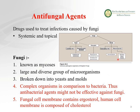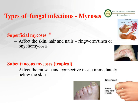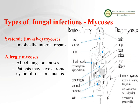Types of infections or mycoses: we can have superficial infections affecting the skin or nails, like tinea or onychomycosis. Subcutaneous mycoses affect the muscles or connective tissues immediately below the skin. Systemic or invasive mycoses involve infection of the internal organs — brain, lungs, heart, or liver — and are very difficult to treat. Allergic mycoses affect the lungs or sinuses, and the patient may have chronic infection like cystic fibrosis or sinusitis.